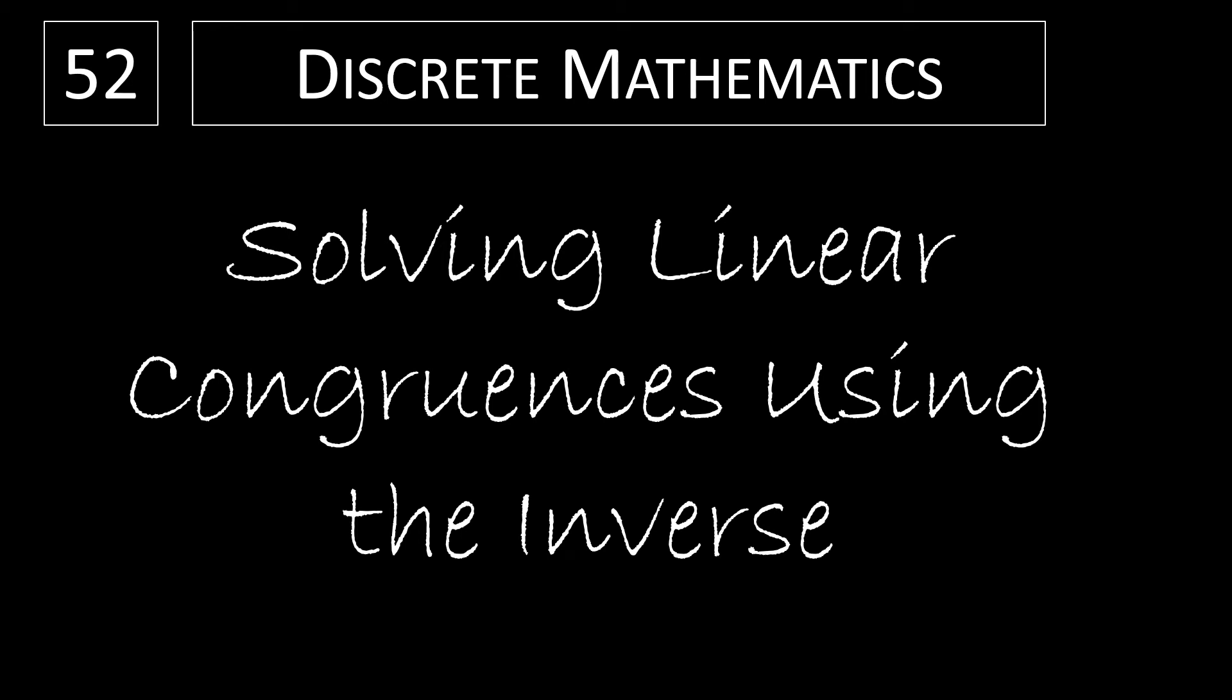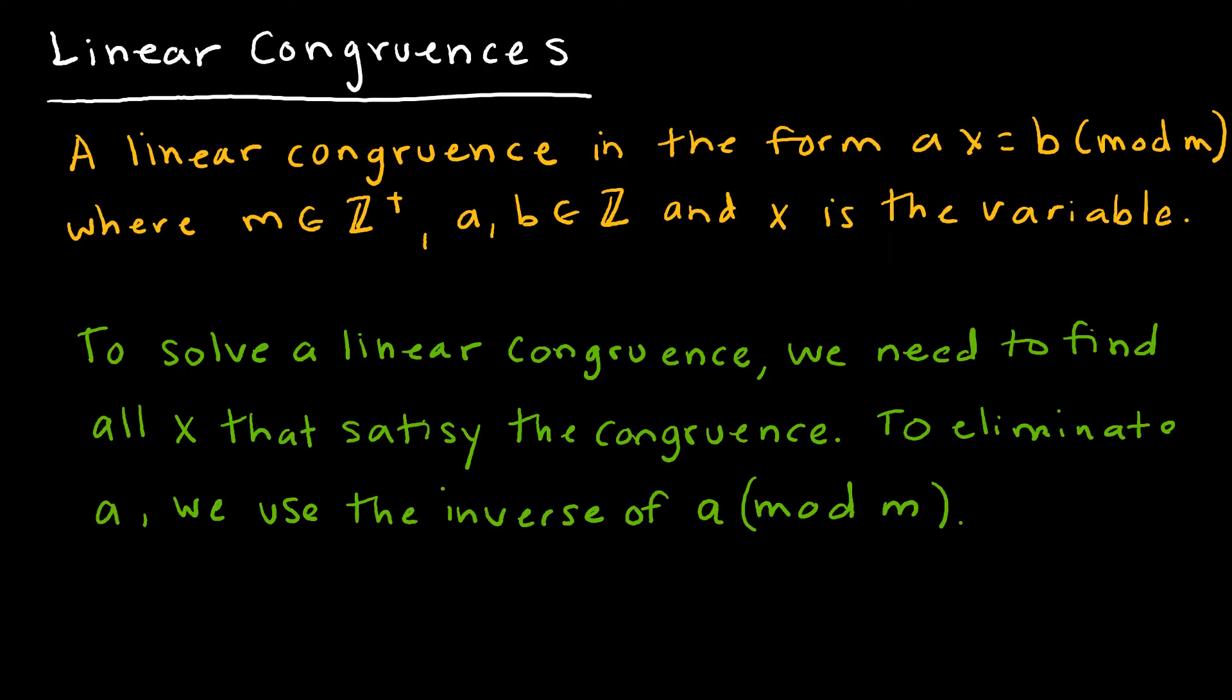In this video, we're going to take a look at solving linear congruences using the inverse. A linear congruence is in the form AX ≡ B (mod M). What we're trying to do is solve a linear congruence, which is to find all of the values of X that satisfy the congruence, and there will be several.